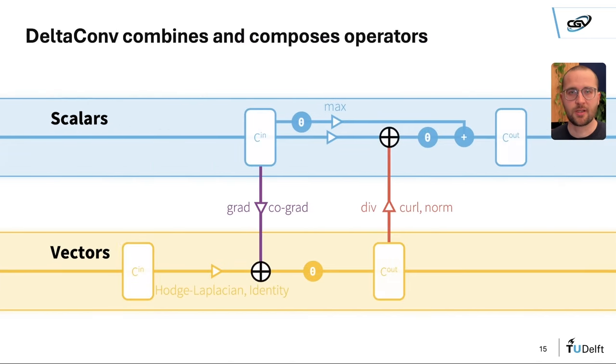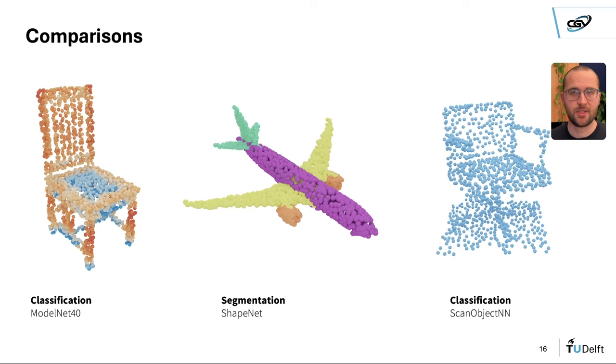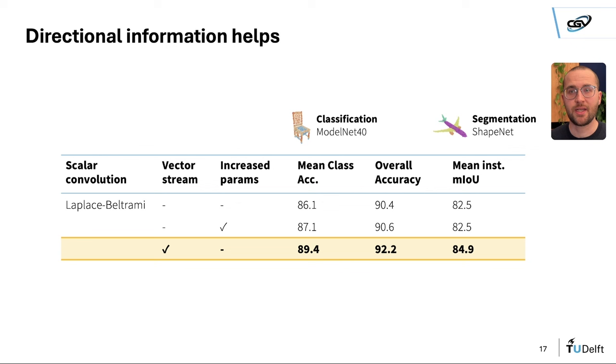The result is delta-conv, which can be applied in general learning tasks such as classification and segmentation. Compared to a network without anisotropic features, delta-conv increases the accuracy and precision and beats the state-of-the-art at the time of publication.